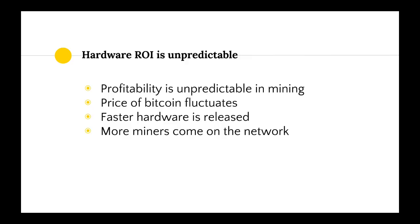Hardware ROI is very unpredictable. There are many factors affecting mining profitability: the price of Bitcoin could fluctuate, and faster hardware is often released within months. You could buy a new device with a break-even point of one year, but three months later a faster device comes online, the network hash power increases, and your device is barely getting the payout you expected. More miners coming on the network makes it more difficult as better technology is released.